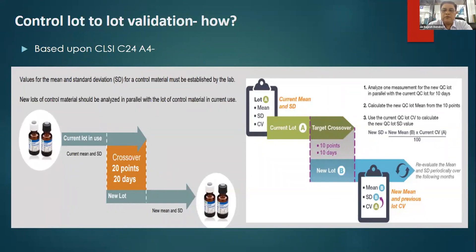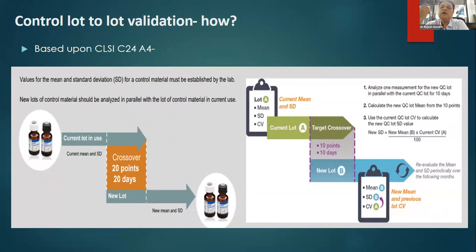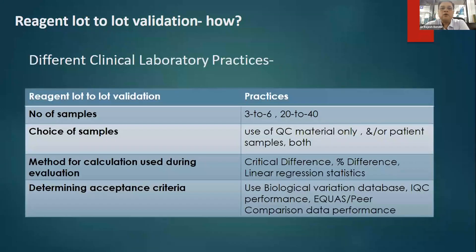Ideally, 20 data points is the recommendation, but there have been papers and publications which talk about even 10 points being used as a crossover study. One very important point, often a myth or miss in majority of labs, is the standard deviation we use. We need to recalculate the standard deviation from the new mean of the new lot control and verify that the mean is close to what the manufacturer is claiming. This confirms we can put the new lot in use as the old lot gets over.